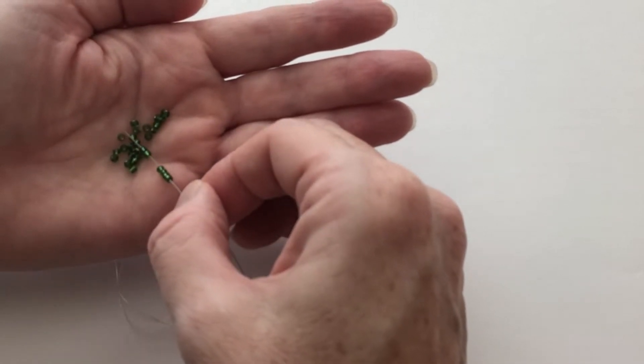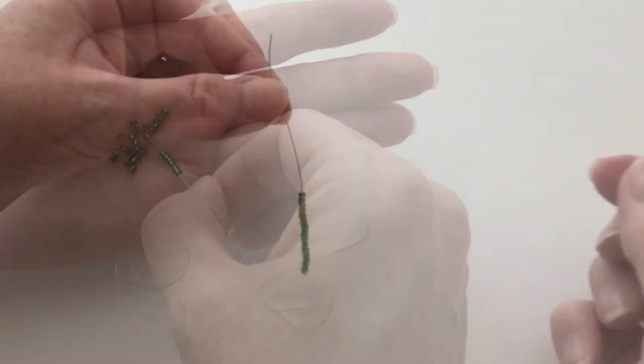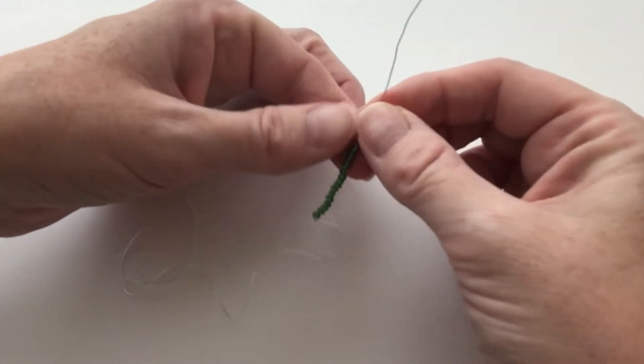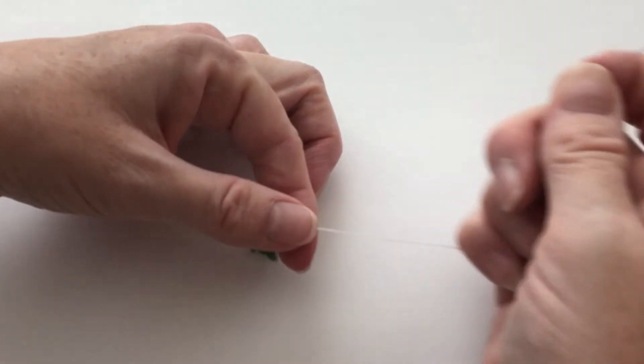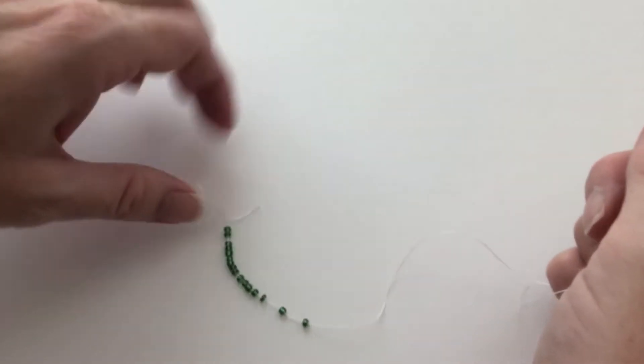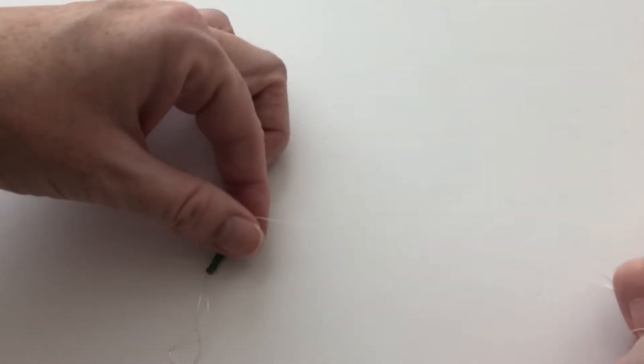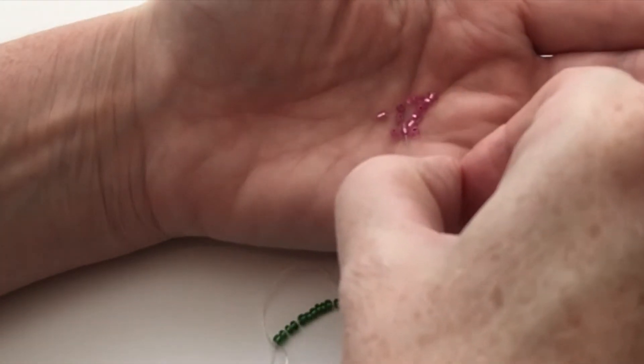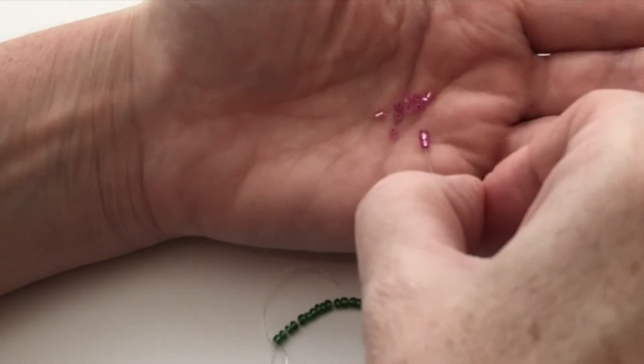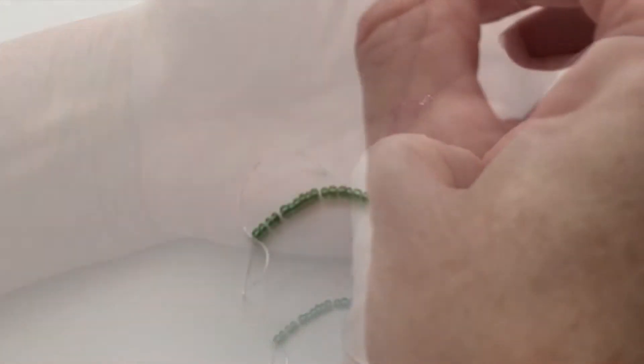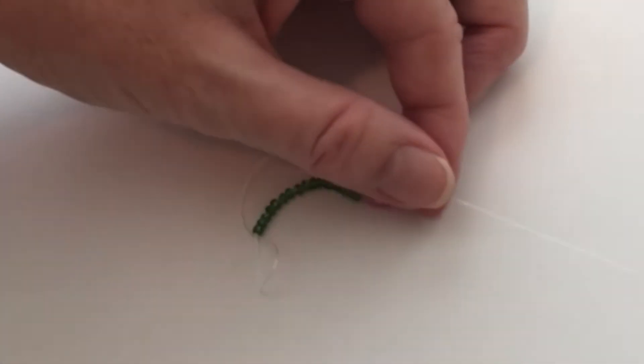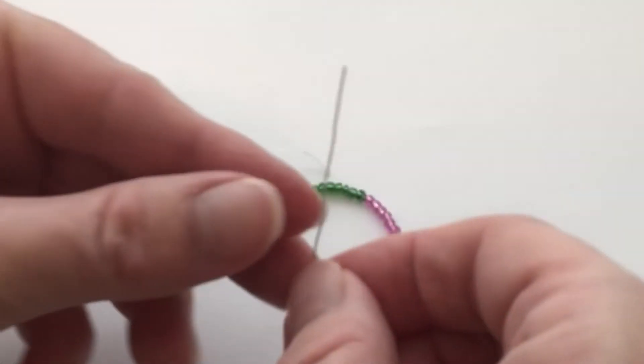For my ring size, the right number of seed beads is about 15. To make the flower part of the ring, thread on six seed beads in the color that you want the petals to be.